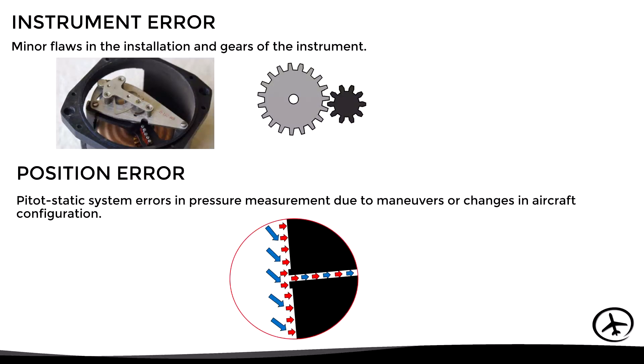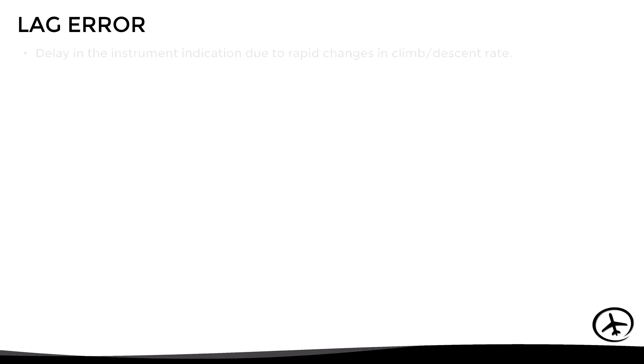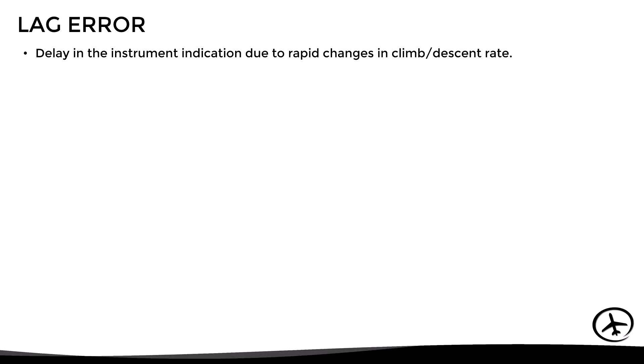However, these are not the only errors present in this instrument. There is another one known as the lag error. This is basically a delay in the instrument indication due to rapid changes in climb or descent rate. This happens because the capsule doesn't have enough time to contract or expand rapidly.